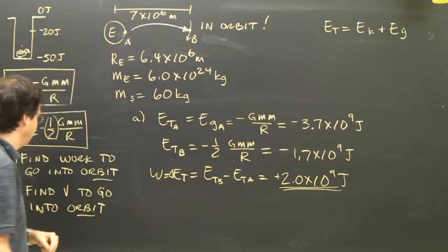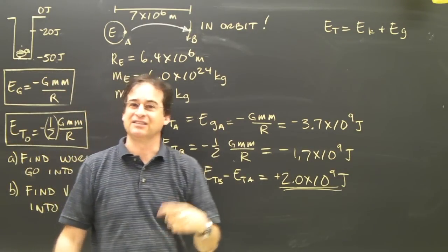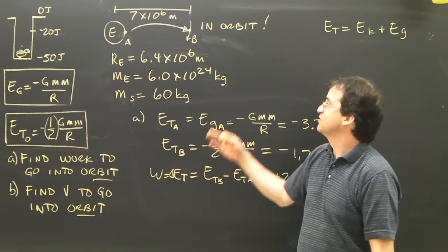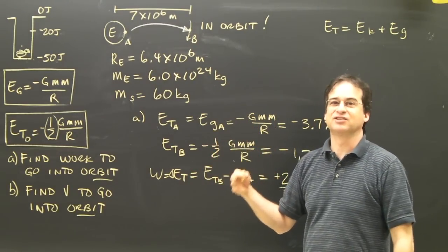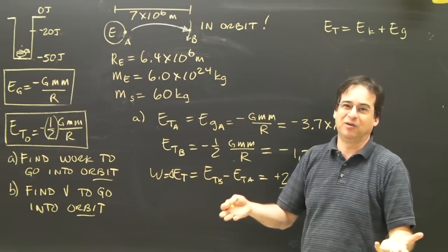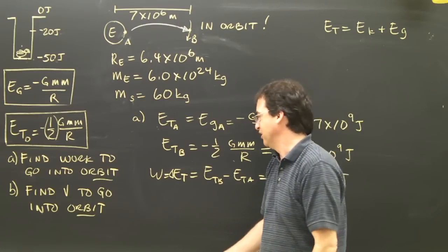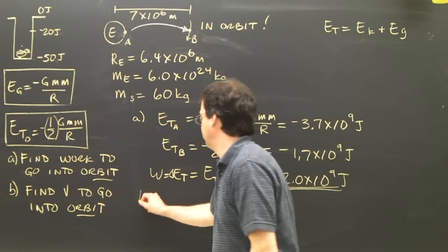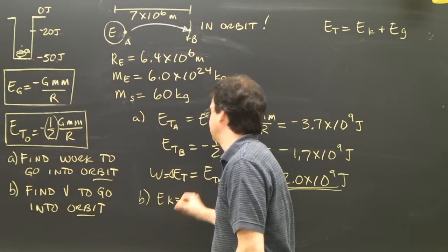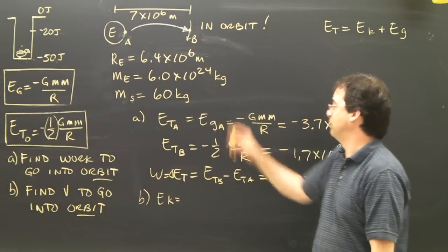Well, part B, find the velocity to go in orbit. As I said before, with energy, when you're asked to find the velocity, you're really asked to find the kinetic energy. Just set it equal to 1/2 mv squared and you can find the velocity. So for v, how much kinetic energy must I add to this thing to get it to go up in orbit?